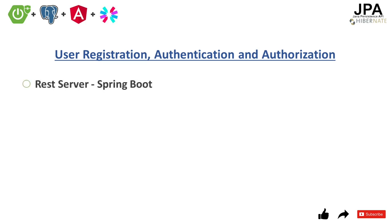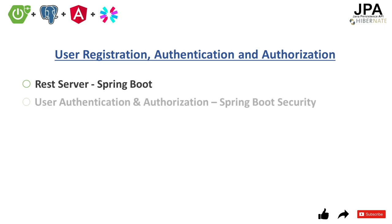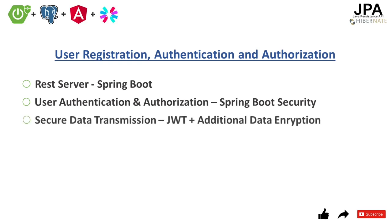First, we are going to develop a simple REST server using Spring Boot and do some simple test runs. Then we will add Spring Security dependency in our project, create required entities and tables in our database. After that, we will authenticate and authorize users using Spring Security. Then to secure data transmission we will add JWT in our project and perhaps some additional encryption method to make it more secure. Finally, we will build an Angular REST client with all required forms for user registration and login.